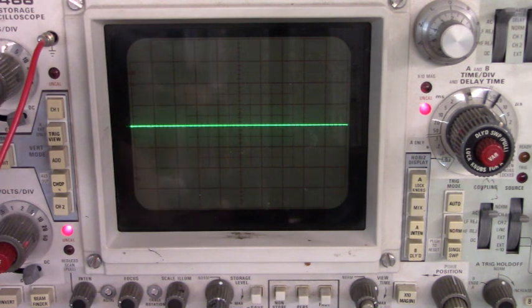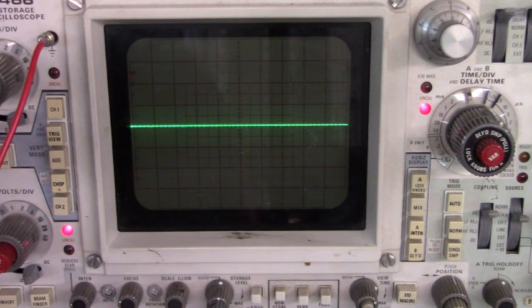It's almost like data bit three is shorted. We're going to have to pull out the digital multimeter, set it to diode mode, and see if we have a short on data bit three.